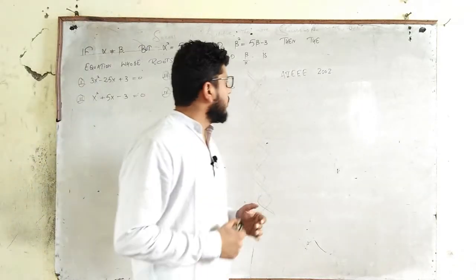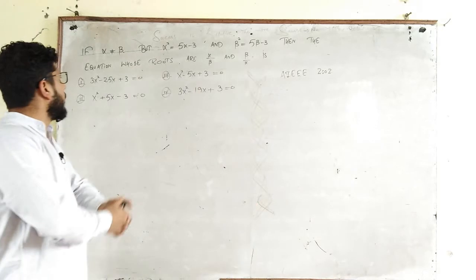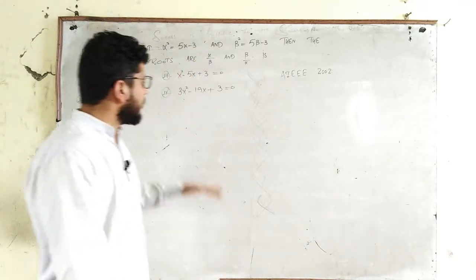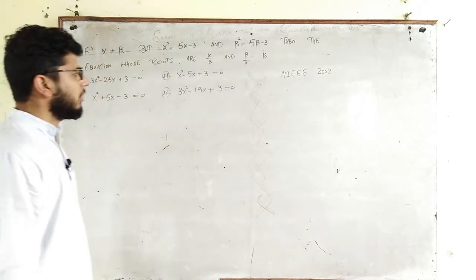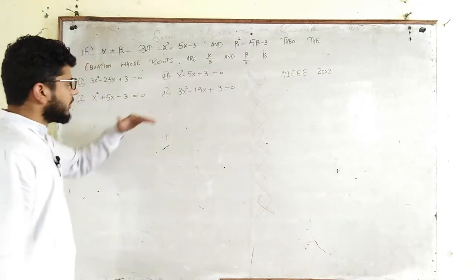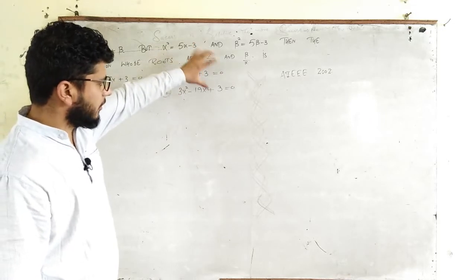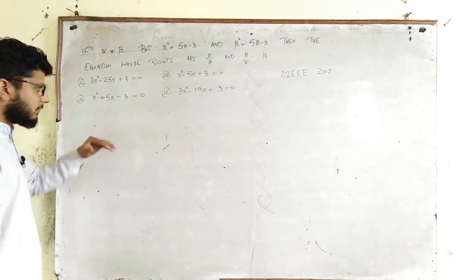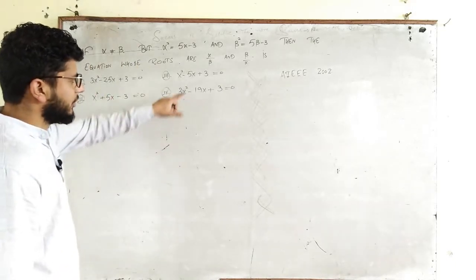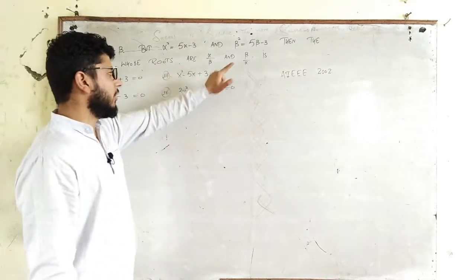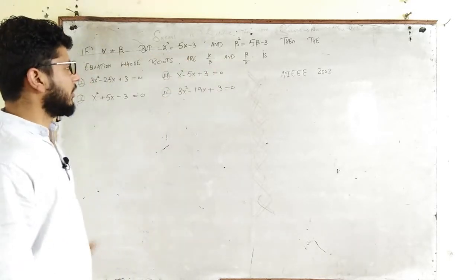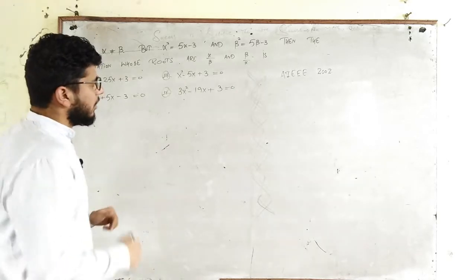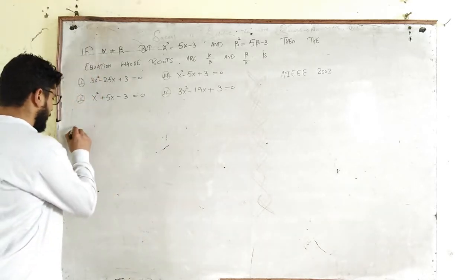AIEEE 2002. This question is based on quadratic equations — specifically, the formation of a quadratic equation. We are given two roots α/β and β/α, and we are supposed to find the quadratic equation whose roots are α/β and β/α. There is a relation given involving α² and β², and it is given that α is not equal to β.